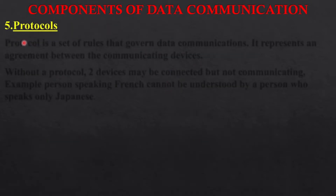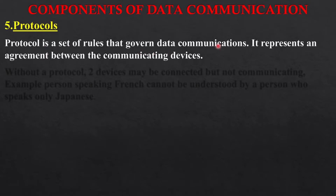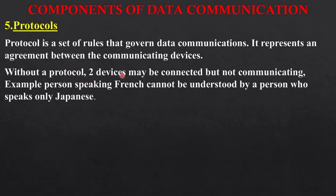The last component of data communication is protocols. Another word for protocol is rules. Whenever data communication happens between sender and receiver, there are some rules followed — it is a set of rules that govern data communication. Because of these rules, data communication happens between the sender and receiver. It represents an agreement between the communicating devices. Without a protocol, two devices may be connected but they won't be able to communicate.